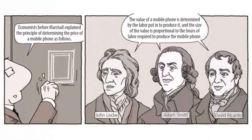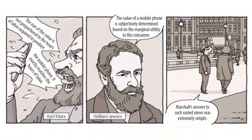Economists before Marshall explained the principle of determining the price of a mobile phone as follows: the value of a mobile phone is determined by the labor put in to produce it, and the size of the value is proportional to the hours of labor required to produce it. Others argued the size of the value exactly matches the hours of labor, not merely proportional.